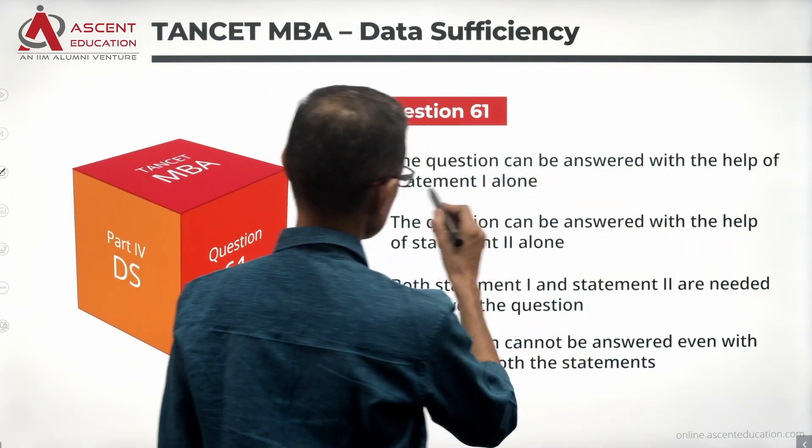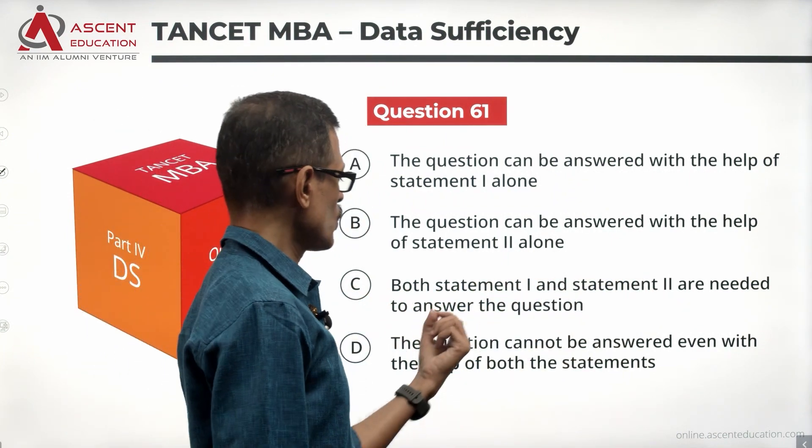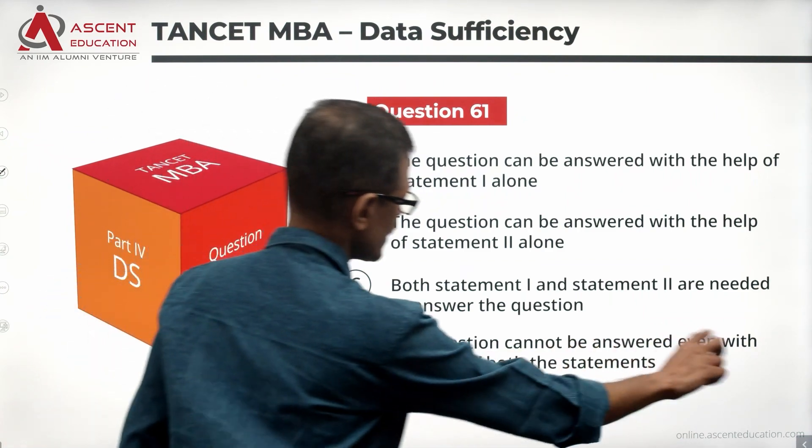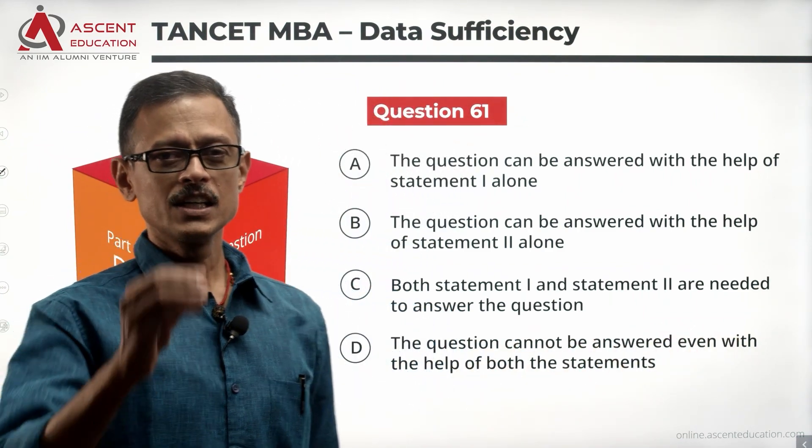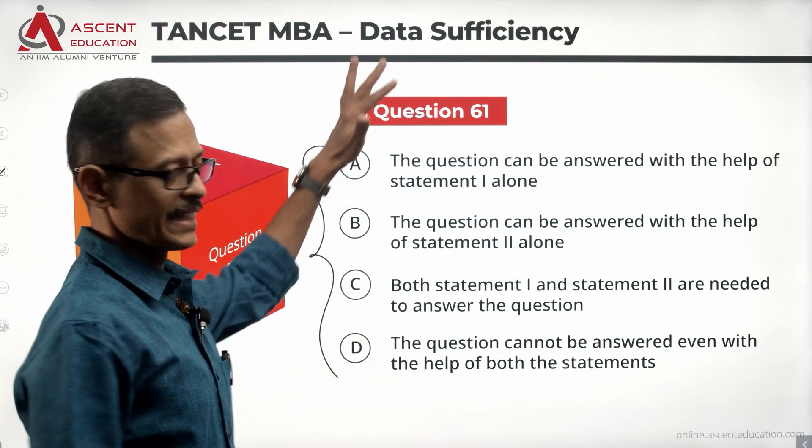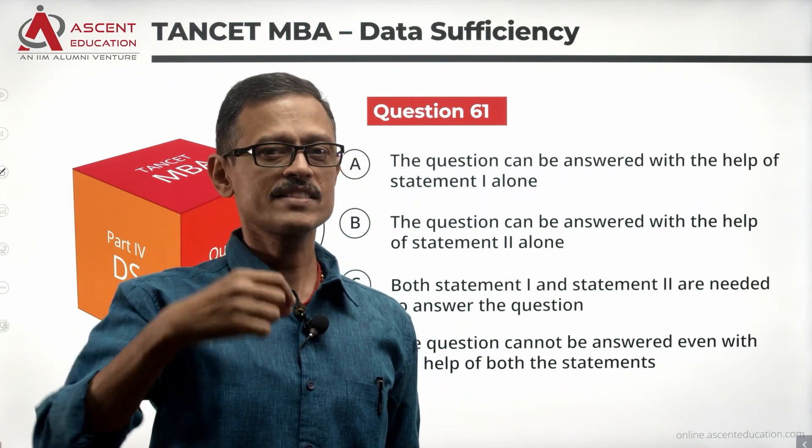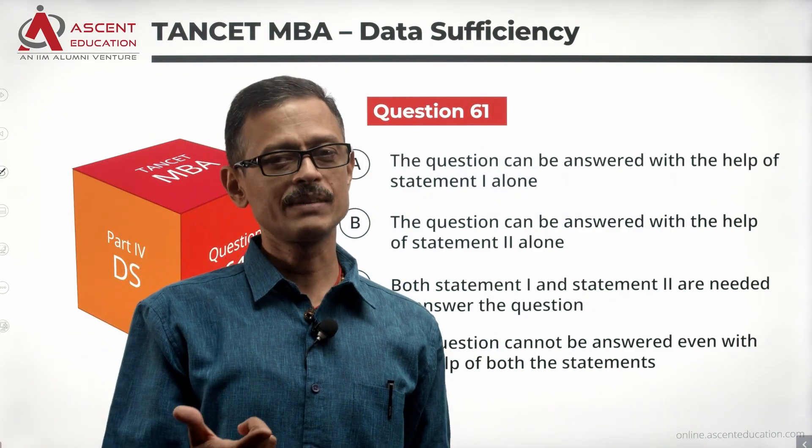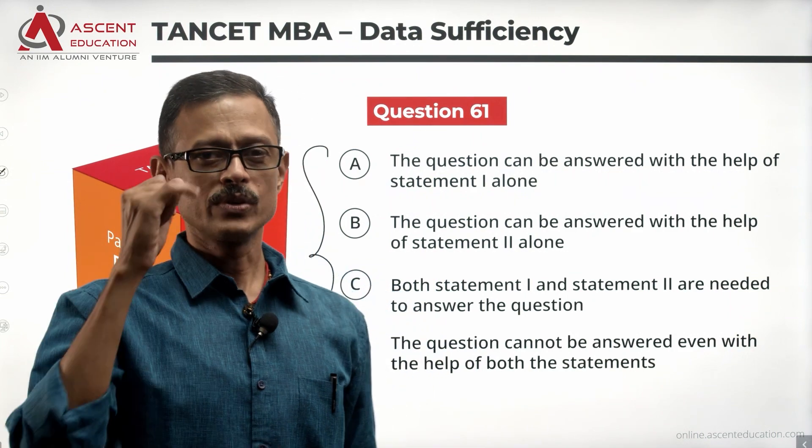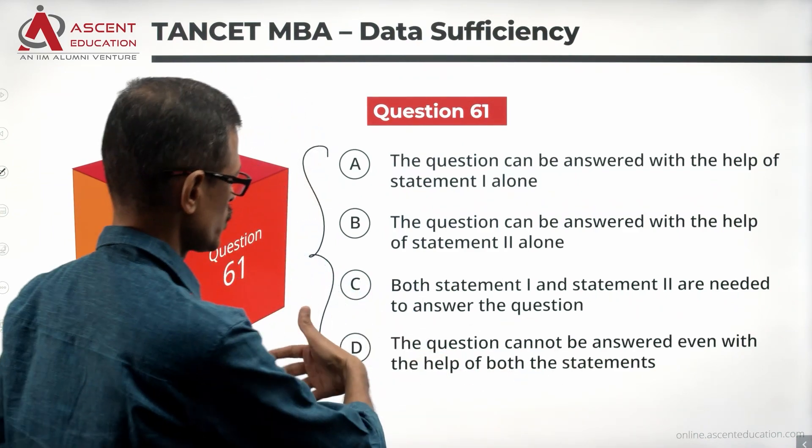The question can be answered with the help of statement 1 alone, that's A. Can be answered with 2 alone, that's B. Both statements 1 and 2 are needed to answer the question, that's C. The question cannot be answered even with the help of both the statements. In the 2021 paper, all the data sufficiency questions have these four answer options. So A is statement 1 alone, B is statement 2 alone, C is together they are sufficient independently they are not, D is given data is not sufficient.